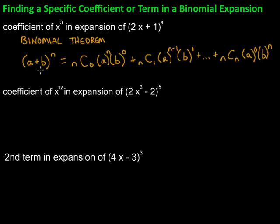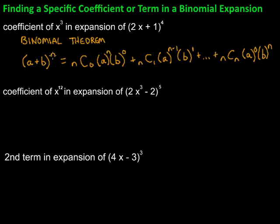The binomial theorem says if we have a binomial that we're taking to the nth power, we can expand it. It starts out with nC0, and then we have our a term and our b term. The a term is to the nth power, and the b term is to the zero power. Then, that bottom number becomes 1, the exponent on a goes down 1, and the exponent on b goes up 1. These two exponents will always add up to n.